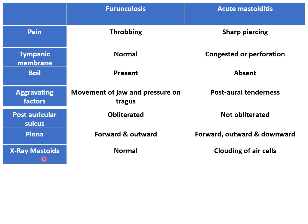On x-ray — specifically the x-ray mastoid or Schuller's view — it will generally be normal in furuncylosis because the middle ear is normal and only the external ear is involved. While in acute mastoiditis, because of the collection of fluid in the mastoid air cells, there will be clouding of the air cells seen on x-ray.